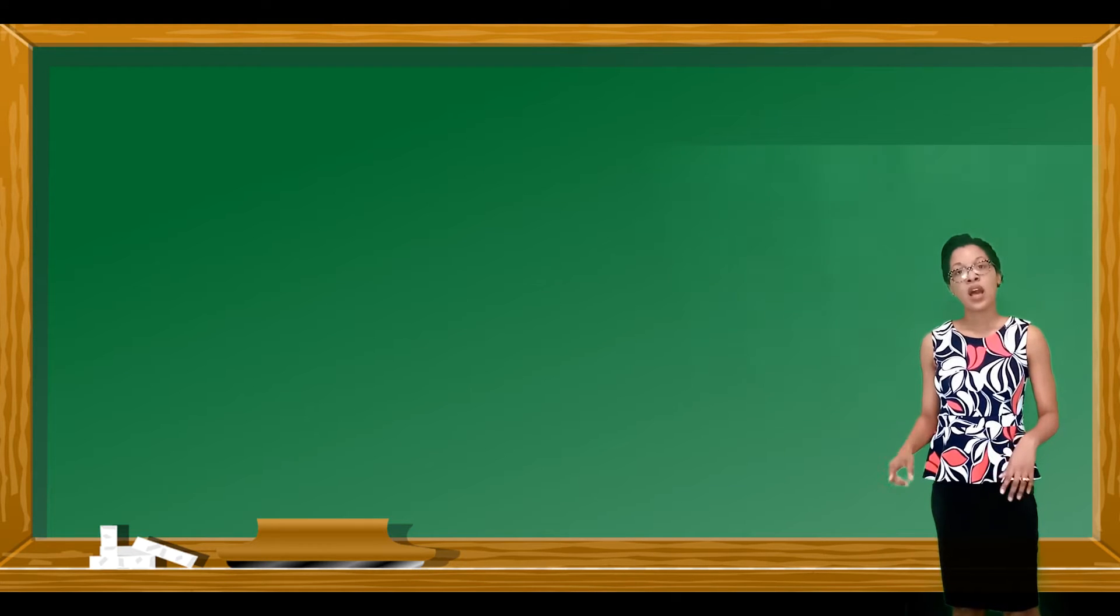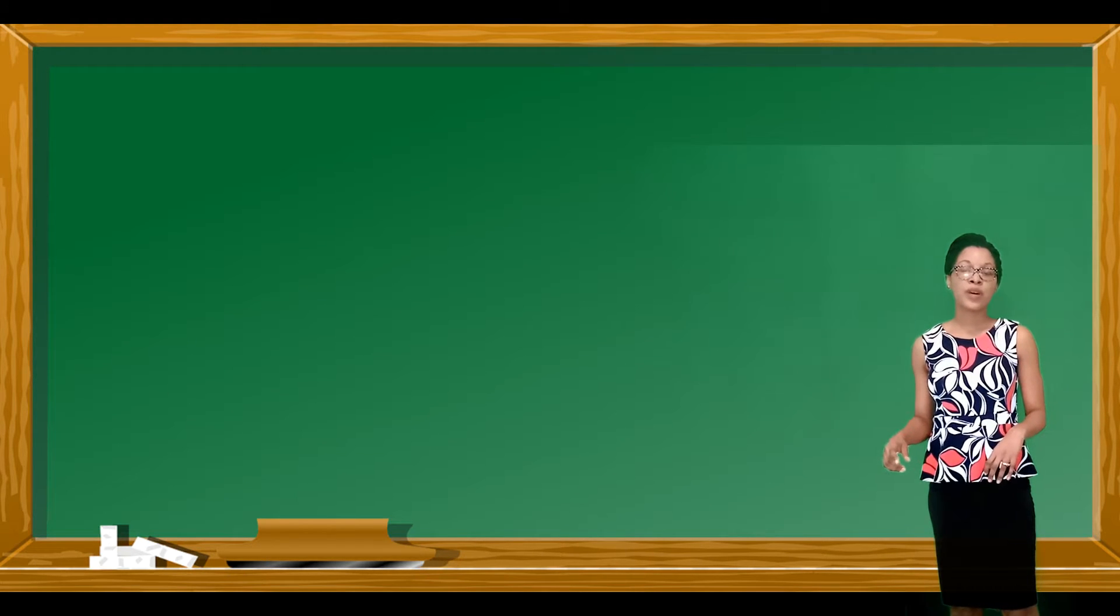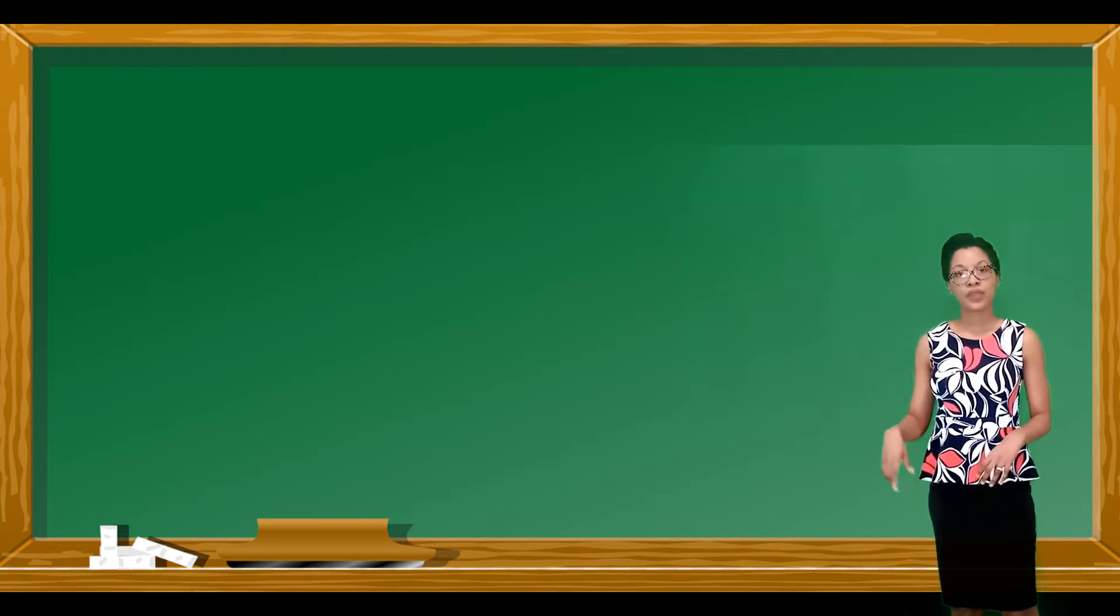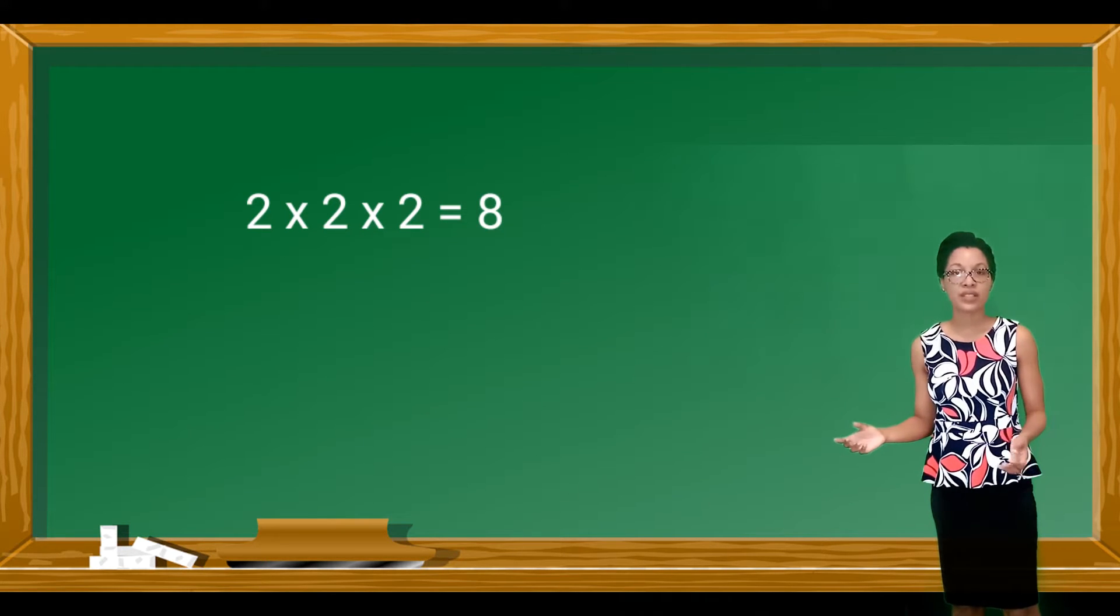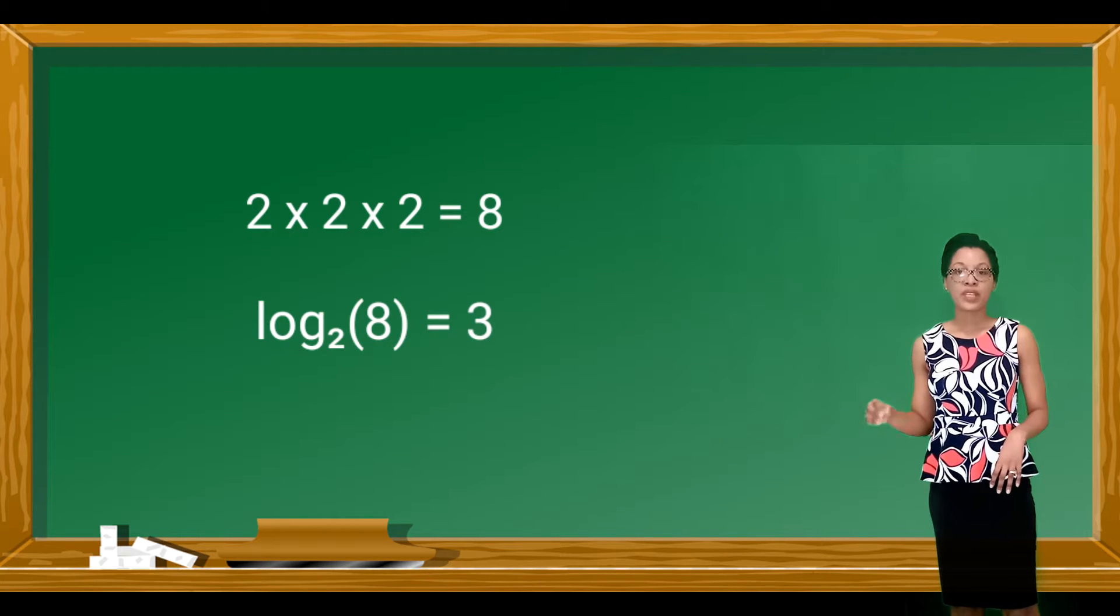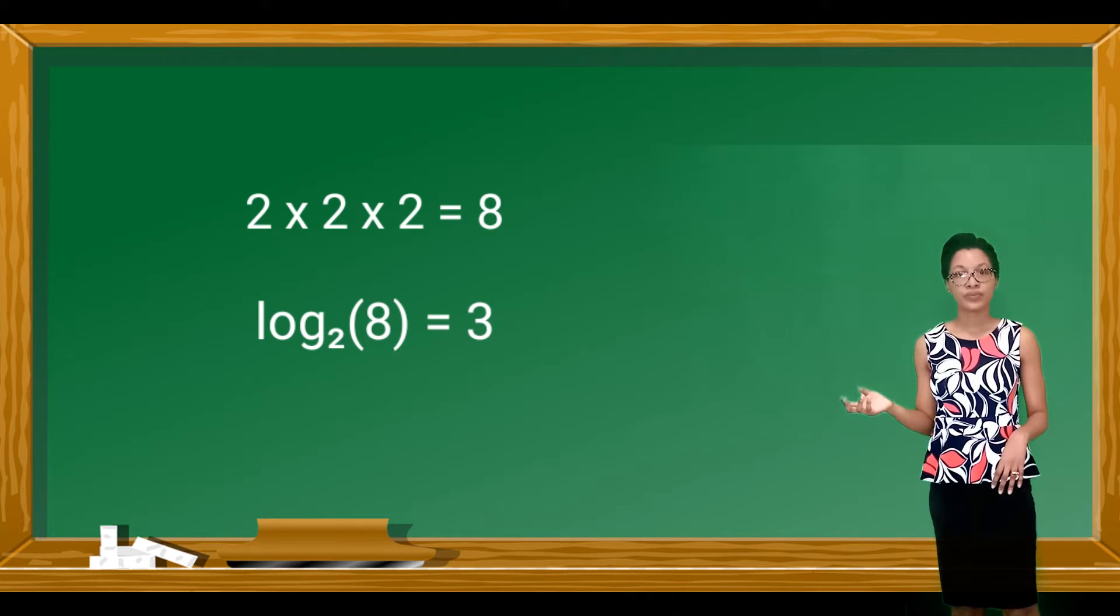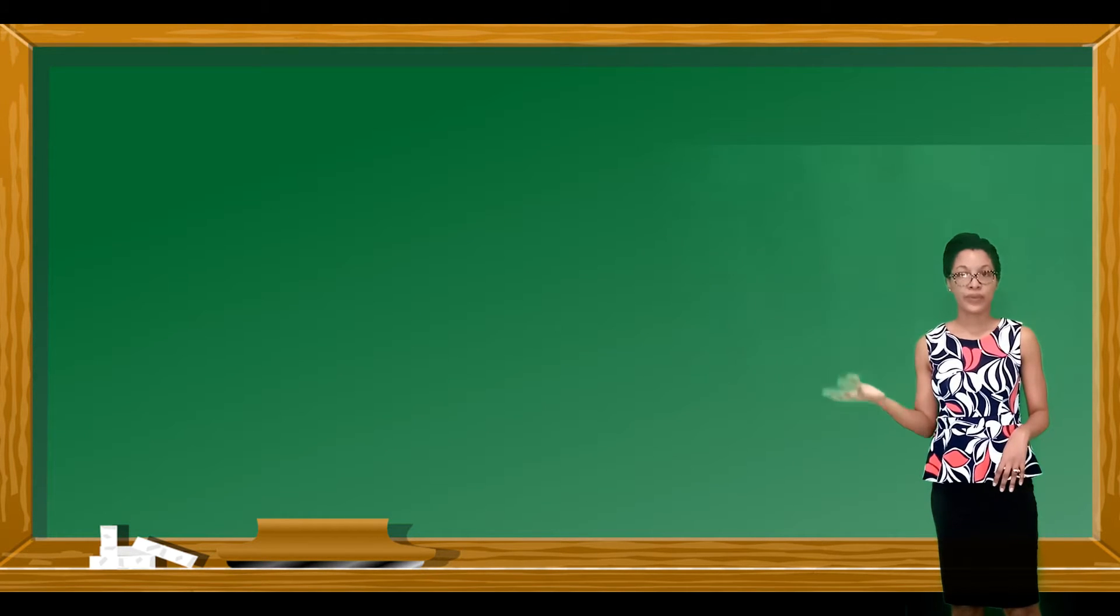For example, how many 2's do we multiply to get 8? 2 by 2 by 2 equals 8. The logarithm is 3 because 3 2's give you 8.